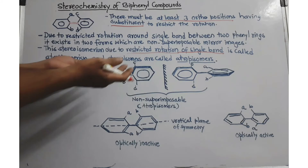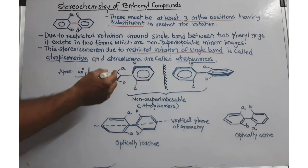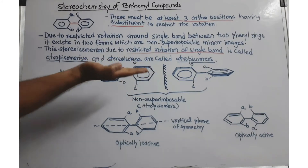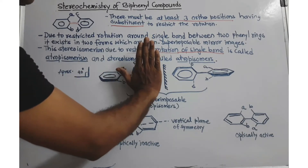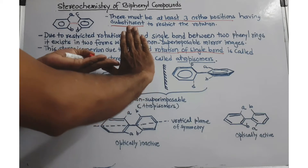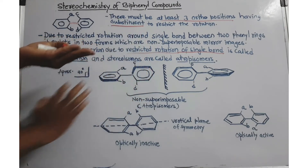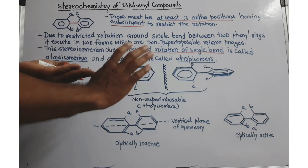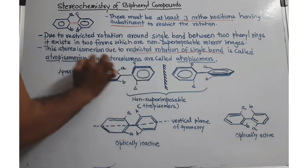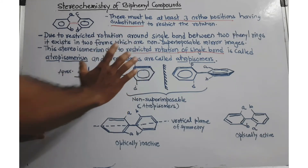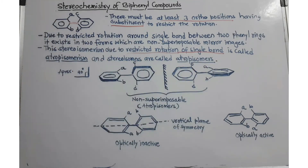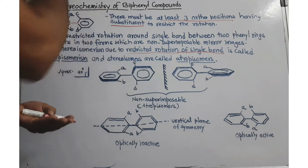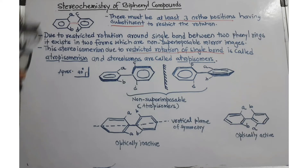If you look at the structure and that rotation is restricted, one ring is lying in one plane and another ring is lying in another plane, meaning the two rings form approximately a 90-degree angle. If these conditions are fulfilled, then and only then can this compound form a non-superimposable mirror image and show optical isomerism.